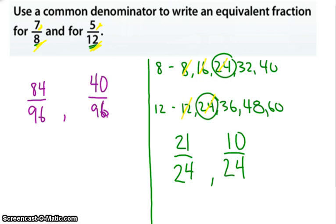And so 21 24ths is equivalent to 7 8ths, and it's also equivalent to 84 96ths. And 10 24ths is equivalent to 5 12ths, which is also equivalent to 40 96ths. So I hope this helped, and you can choose either one of these ways. Thank you.